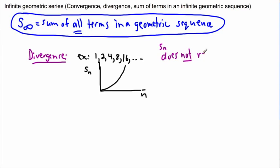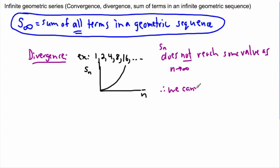Sn does not reach some value as n approaches infinity. As we get larger and larger n values, Sn just gets larger and larger as well. Because of that, we cannot calculate S infinity — the sum diverges. As you get an infinite number of terms, the sum is also infinite.